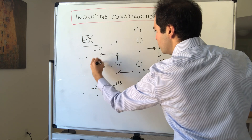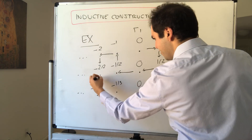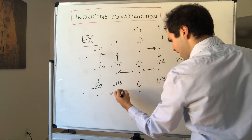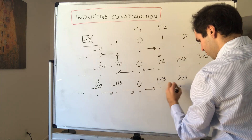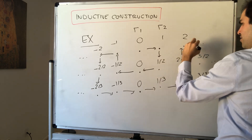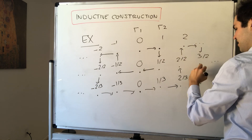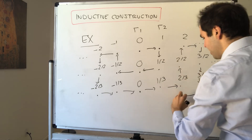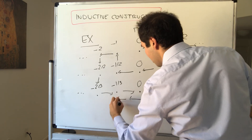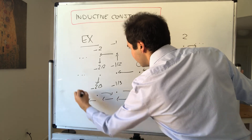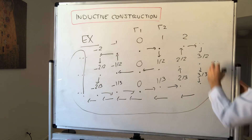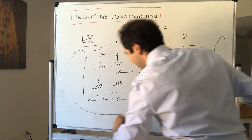Then you go to 0, then to −1/2, then to 1, then to −2, then to −2/2, then to −2/3, −1/3, 0 — and you just snake around like this, looping around and continuing the same way.